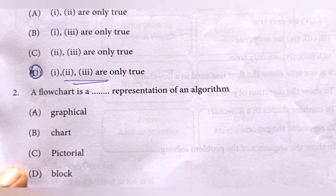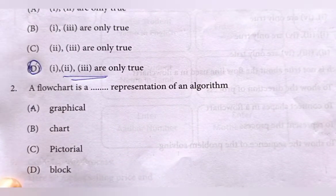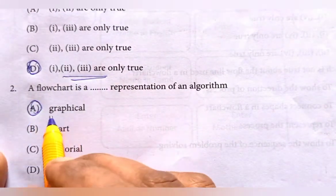Second question: a flowchart is a dash representation of an algorithm. It is a graphical representation of an algorithm.